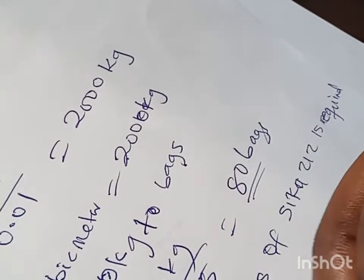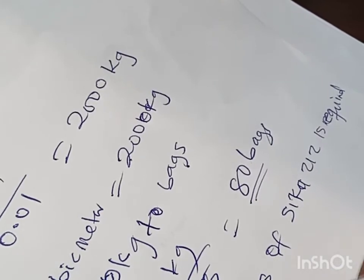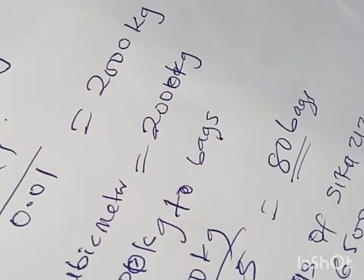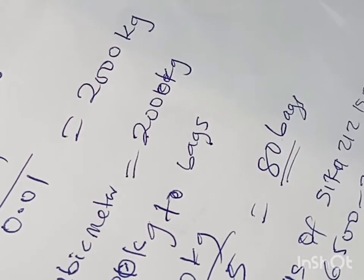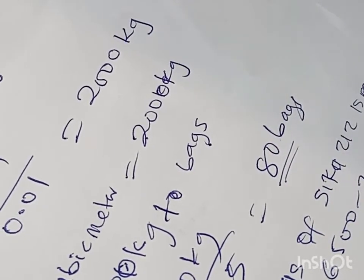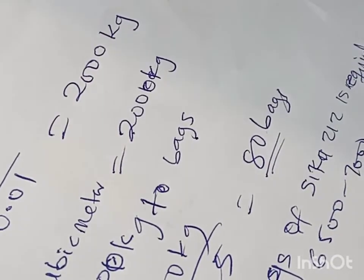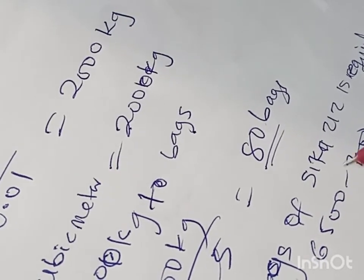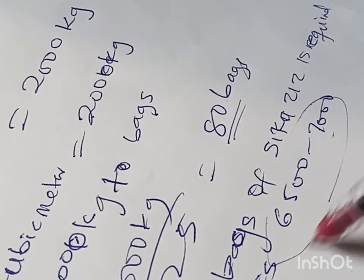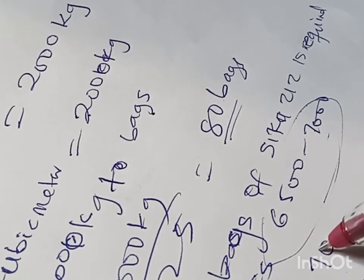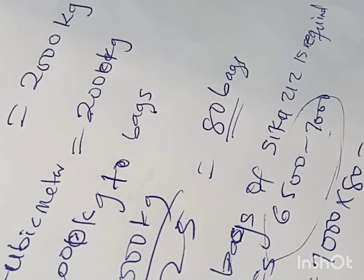For grouting in Nigeria here, the cost per bag is 6500 to 7000 naira. So averagely we're going to go with the highest and multiply by 80 bags to be on the safer side. This cost is based on our location and our negotiation skill. This will give us 7000 times 80, which is equal to 560,000 naira.